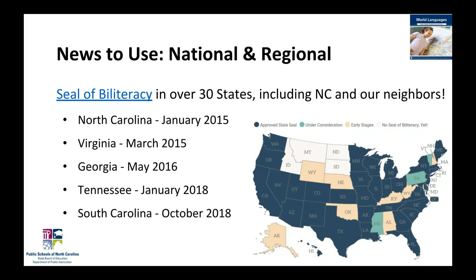Most states have a state-level seal just like North Carolina does and our neighbors in the southeast, but some states have specific seals tied to a district or community. On the map, states in darker blue have a seal, those in green are under consideration, and those in tan are in early stages. North Carolina has had a Seal of Biliteracy since January 2015. Virginia got theirs in March 2015, Georgia in May 2016, and Tennessee and South Carolina recently got theirs this year — South Carolina just last month in October.